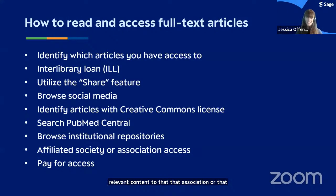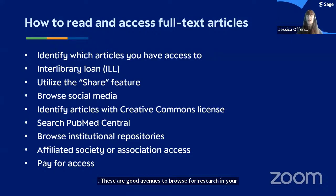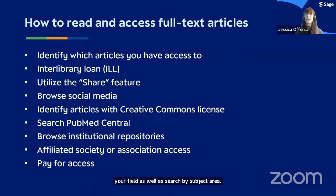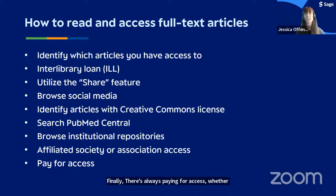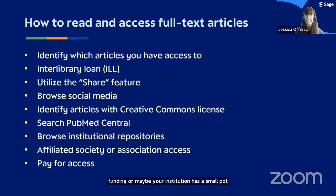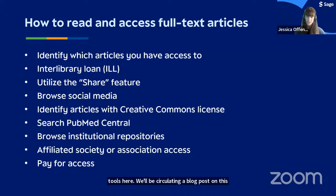Repository sites like Academia and ResearchGate are good avenues to browse for research in your subject area — you can look through the profiles of researchers in your field and search by subject area. There are a great number of ethical tools available to access the content you're looking for when working on research projects or conducting literature reviews. Finally, there's always paying for access — whether an individual subscription or just for that particular article, which you might be able to build into grant funding.